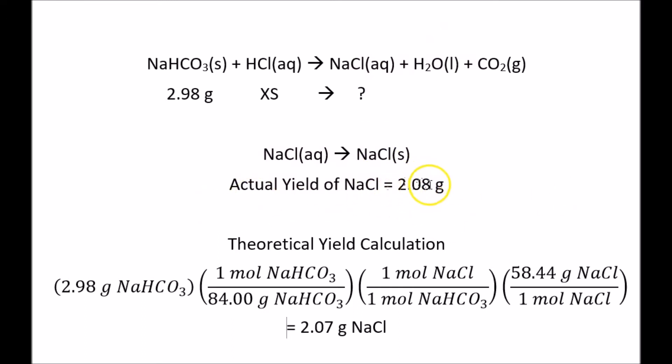Then we calculated the theoretical yield. We took the 2.98 grams of sodium bicarbonate and converted that to moles of sodium bicarbonate by taking 1 mole of sodium bicarbonate per 84 grams of sodium bicarbonate. We converted using the 1 to 1 molar ratio to moles of sodium chloride.